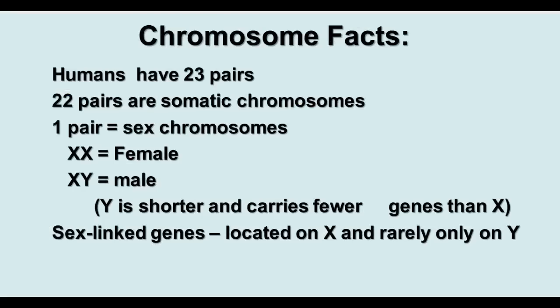In humans, we have 23 pairs of chromosomes. Twenty-two pairs are somatic chromosomes — the regular chromosomes that control everything else in the body. The 23rd pair are the sex chromosomes. Females have two X chromosomes, and males have an X and a Y. The Y chromosome is shorter and carries fewer genes than the X. There are certain genes located on the sex chromosomes called sex-linked genes. Most sex-linked genes we know about are on the X chromosome, with very few tracked on the Y.